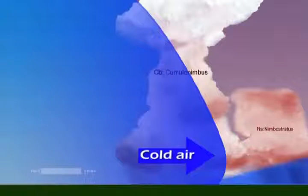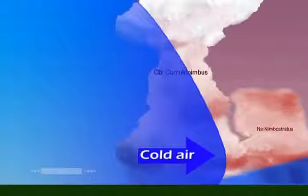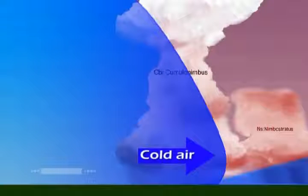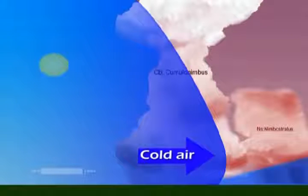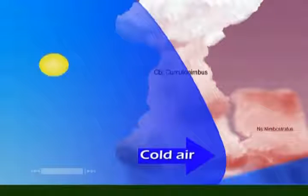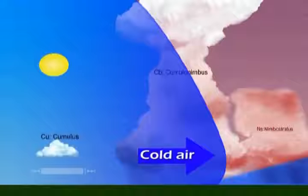Then a high-pressure system, also known as an anti-cyclone, sets in. The front having passed, the sun's rays are now able to penetrate the clear skies and heat the ground, creating updrafts of air-cooled thermals. Visibility is excellent. Cumulus clouds are present in the sky.